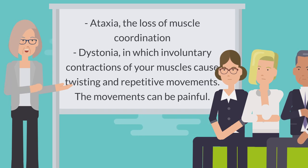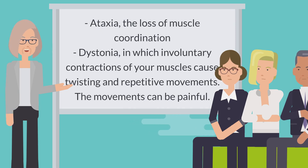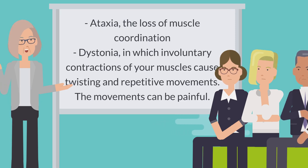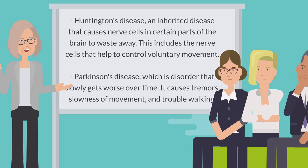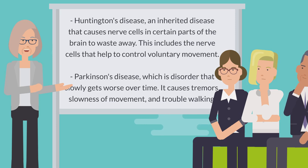Ataxia, the loss of muscle coordination. Dystonia, in which involuntary contractions of your muscles cause twisting and repetitive movements — the movements can be painful. Huntington's disease, an inherited disease that causes nerve cells in certain parts of the brain to waste away.